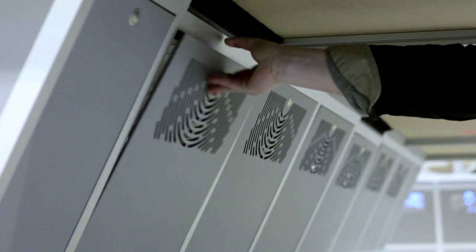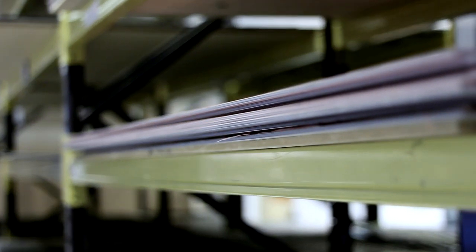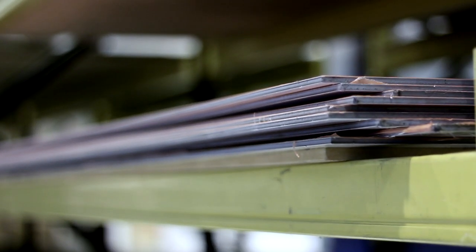The main but not exclusive cladding panel used with the Core system is a composite sheet. The core of the sheet is a polyethylene sandwiched between two layers of aluminium.